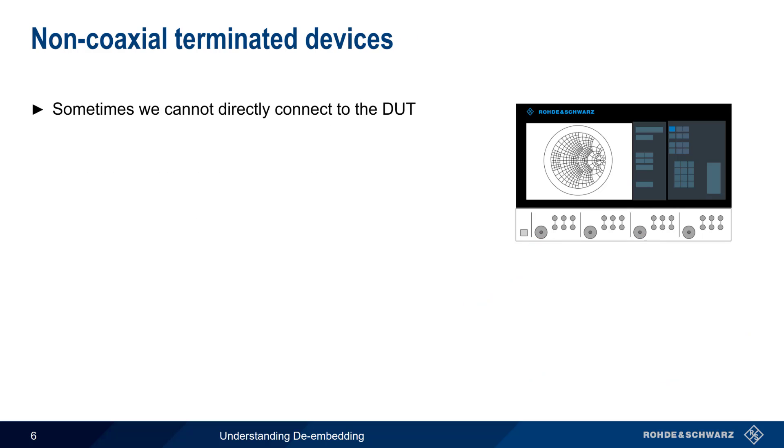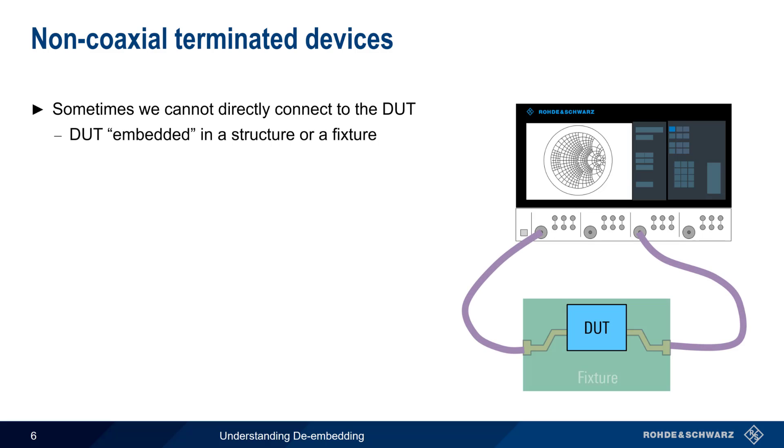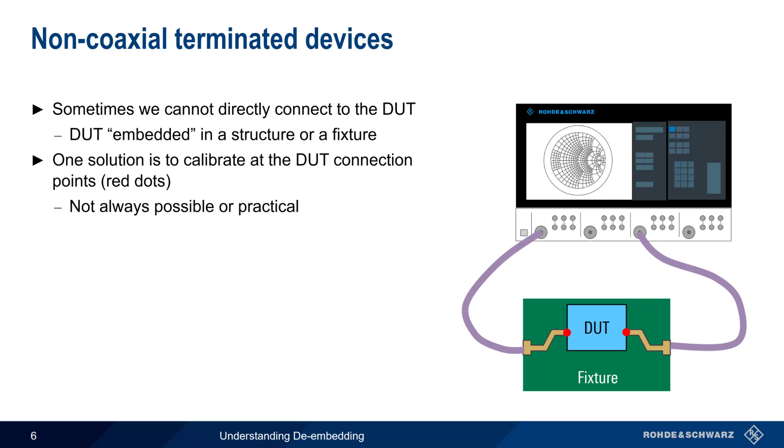So, what do we do if we can't directly connect our VNA to the DUT? For example, when our DUT is embedded in a structure or a fixture? One solution would be to somehow calibrate at the connection point between the DUT and the fixture, shown here as red dots. But this is not always possible or practical. There are, however, various methods that can be used to remove the effects of the fixture, and this is sometimes referred to as fixture compensation.